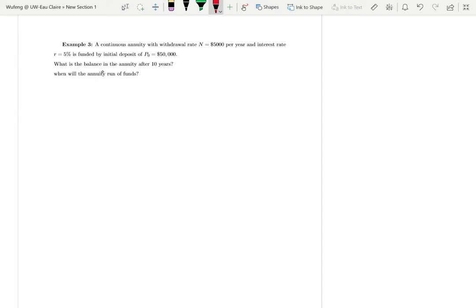This is an example of a continuous annuity with withdrawal rate N equals $5,000 per year, interest rate 5%, funded by initial deposit of $50,000. What is the balance in the annuity after 10 years?